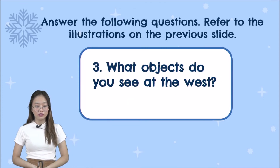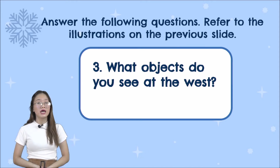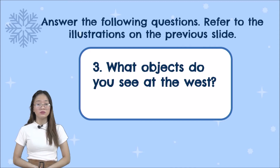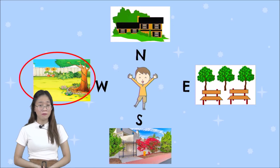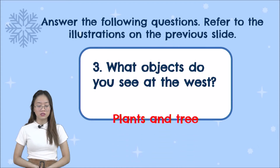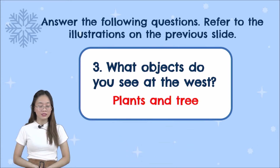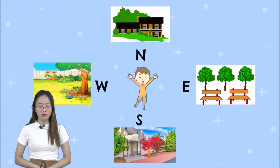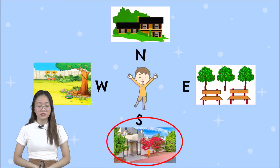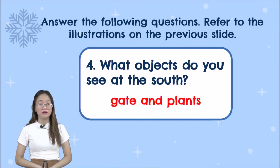For number three, what objects do you see at the west? On the west direction, the objects we can see are the tree and the plant — plants and tree, because we only have one tree. For number four, what objects do you see at the south? This is the south direction — we can see the gate and the plant. So the answer for number four is gate and plants.